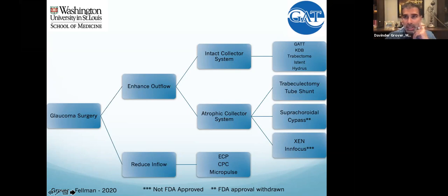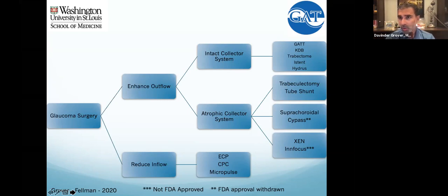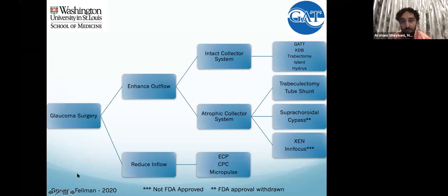When I think of a tube, I want to create an outflow system that's not going to scar down — a true exit site for aqueous that's less dependent on a patient's ability to form scar tissue. I like to avoid trabs or tubes when I can, but we obviously need them. For mild to moderate cases, we're generally trying to open up the natural physiologic outflow pathway.